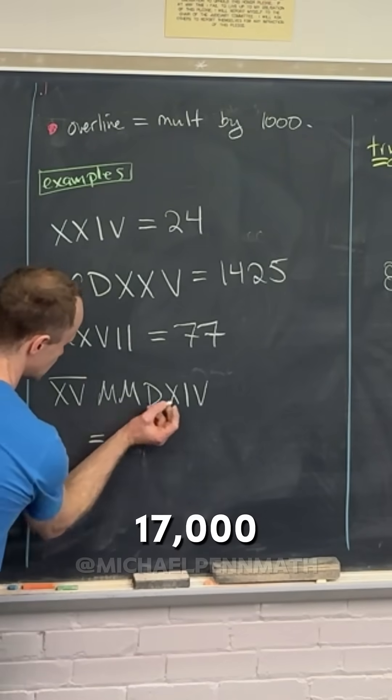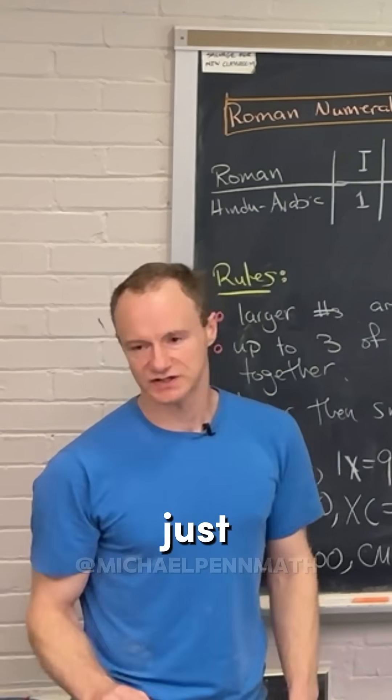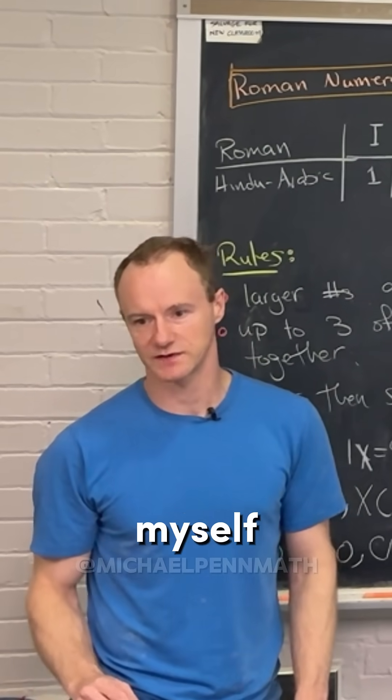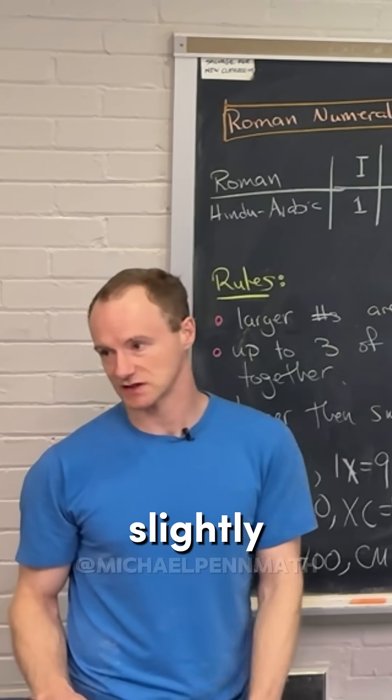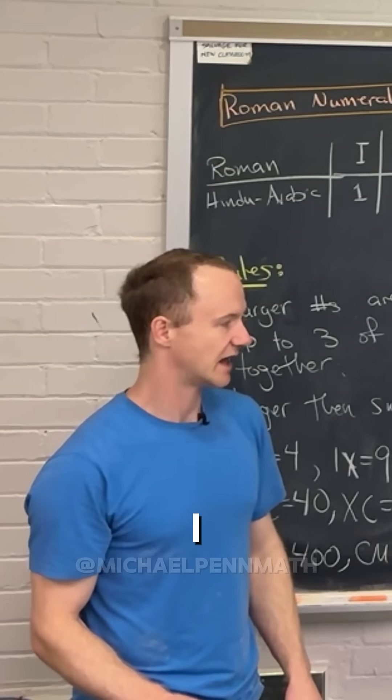And then I think I just contradicted myself in terms of the unique representation, because you could also do that 17,000 a slightly different way with like XVII overline. Okay, so there's not a unique representation.